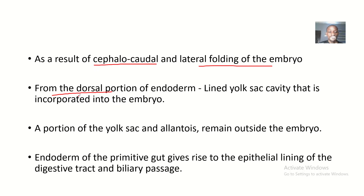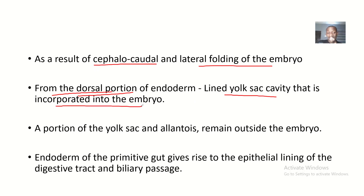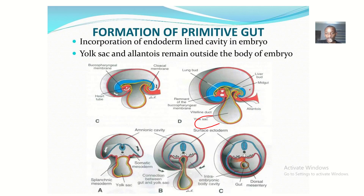The primitive gut is formed from the dorsal portion of the endoderm — specifically the endoderm-lined yolk sac cavity that is incorporated into the embryo. So part of the primitive gut is formed from the dorsal portion of the endoderm, which is the lined yolk sac cavity incorporated into the embryo.